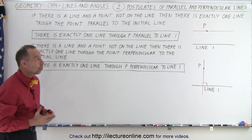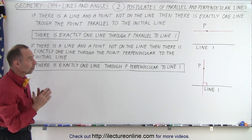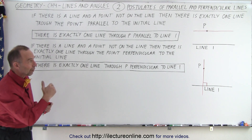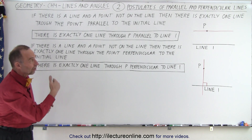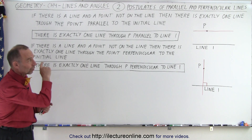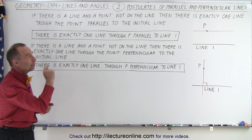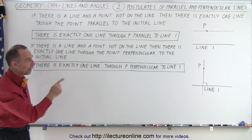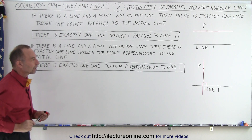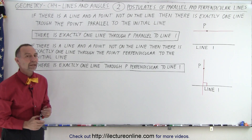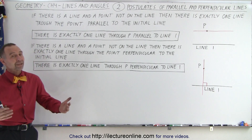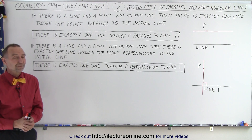That's how we know: when we have a single line and a second line, there's only one line that can be drawn parallel through that point, and only one line that can be drawn perpendicular through that point. And that's how it is.